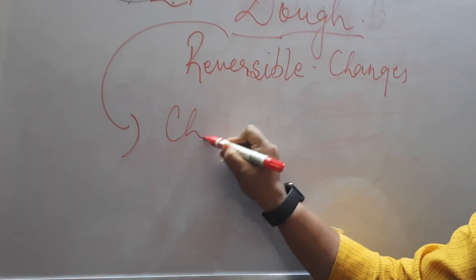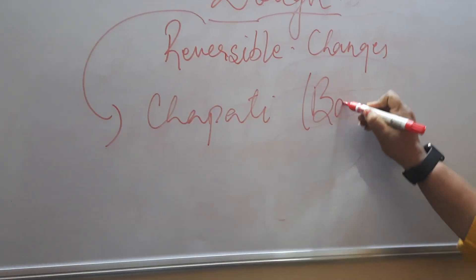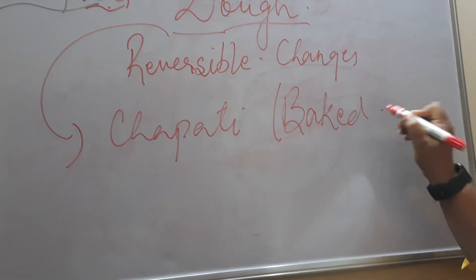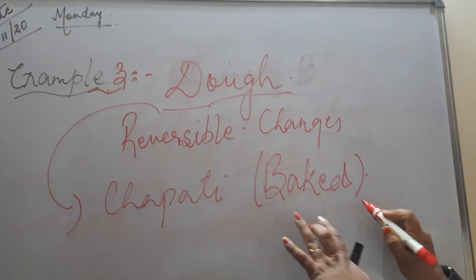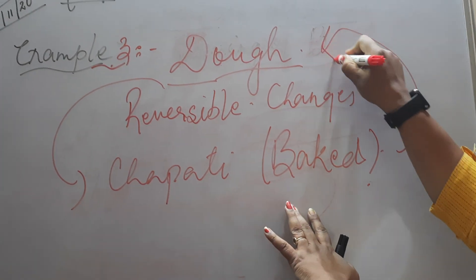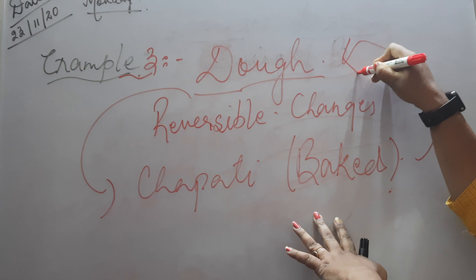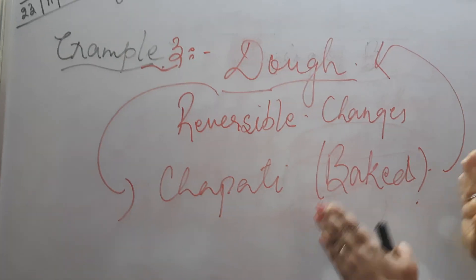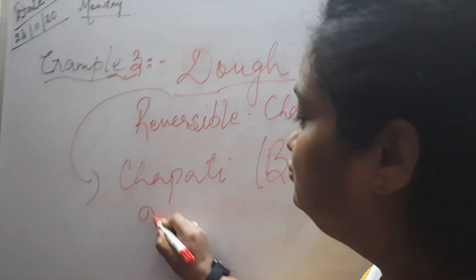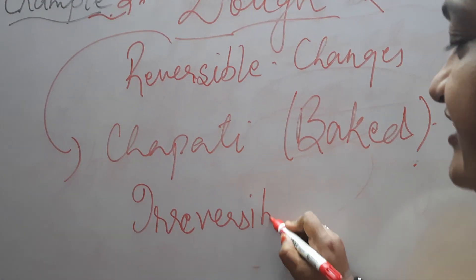Your mother made that chapati and she baked the chapati. Chapati ko unhone sekh liya. She baked the chapati. Ab sekhne ke baad, again you tell that I don't like that chapati shape. You make it again into that dough. It cannot be. Yeh pak chuka hai. A new substance has been formed. So, it is known as irreversible changes.